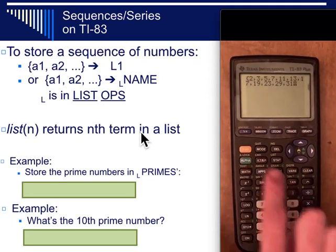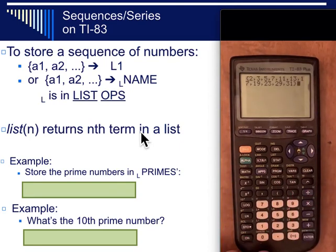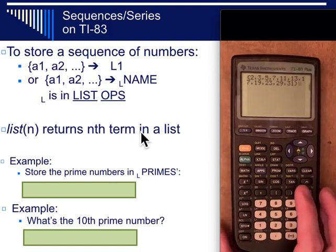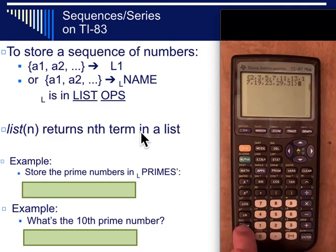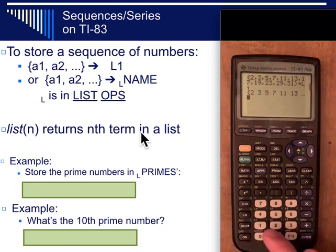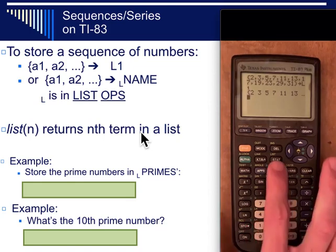When you're done hit second and parentheses to close that. And if you want to store this list of numbers somewhere so that you can use it in multiple calculations, you press the store button down here and then either use one of these presets by hitting say second one and store it into list one.